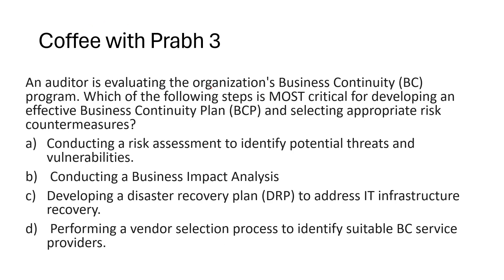An auditor is evaluating the organization's business continuity program. Which of the following steps is most critical for developing an effective BCP and selecting appropriate risk countermeasures? Option A: conducting a risk assessment to identify potential threats and vulnerabilities — risk assessment identifies threats and can identify impact, but it won't tell you the level of impact or how to prioritize. Before answering, let me explain how BCP works.